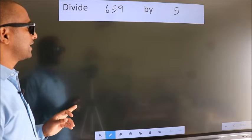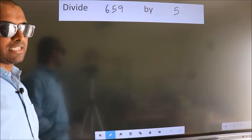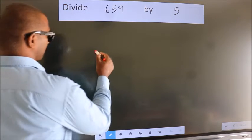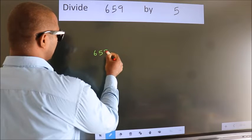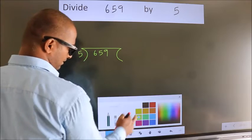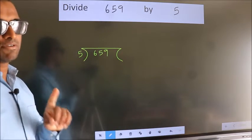Divide 659 by 5. To do this division, we should frame it in this way. 659 here, 5 here. This is step 1.